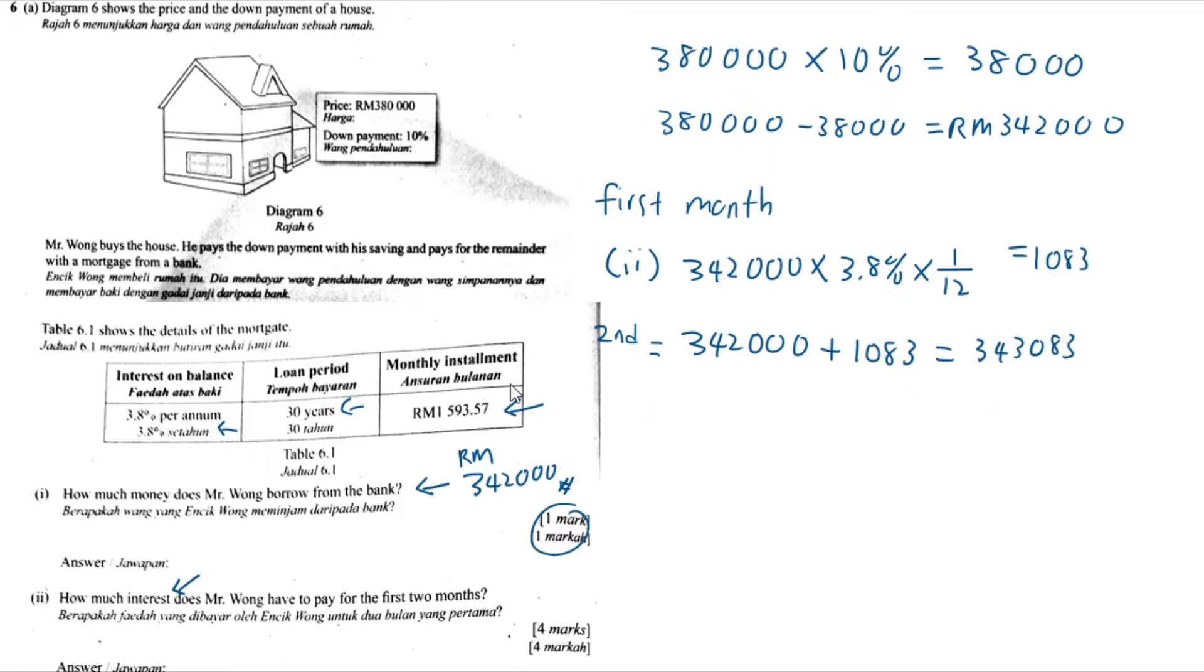And then we have paid the monthly installment. So we use $343,083 minus the installment. This is the leftover we need to pay, which is $341,489.43. Now we are required to calculate the second month interest.